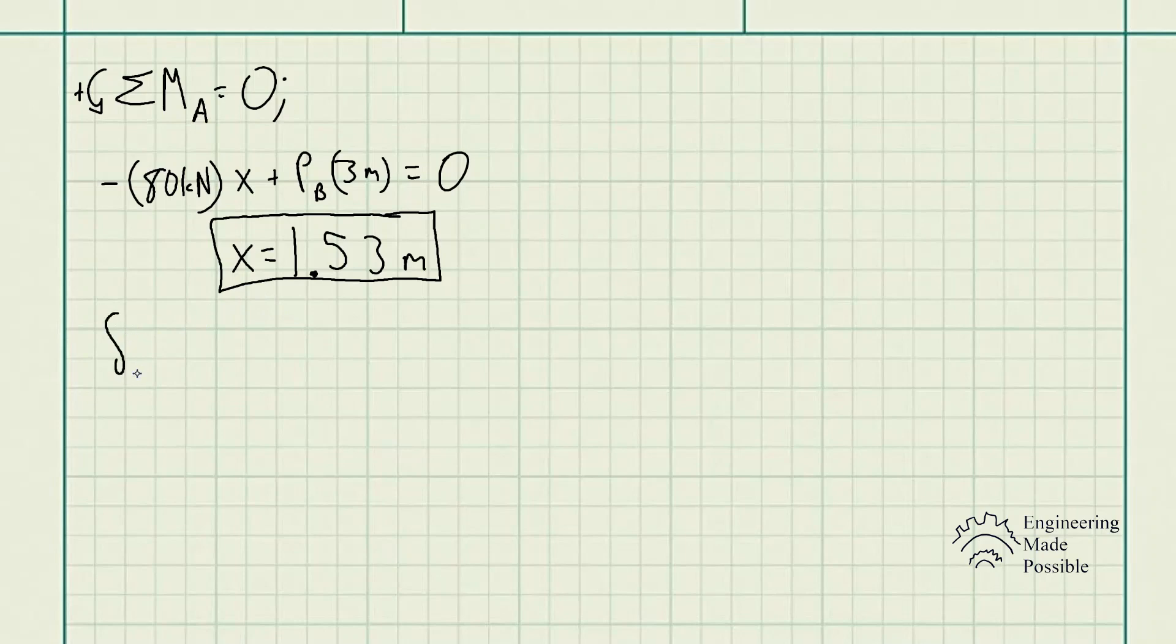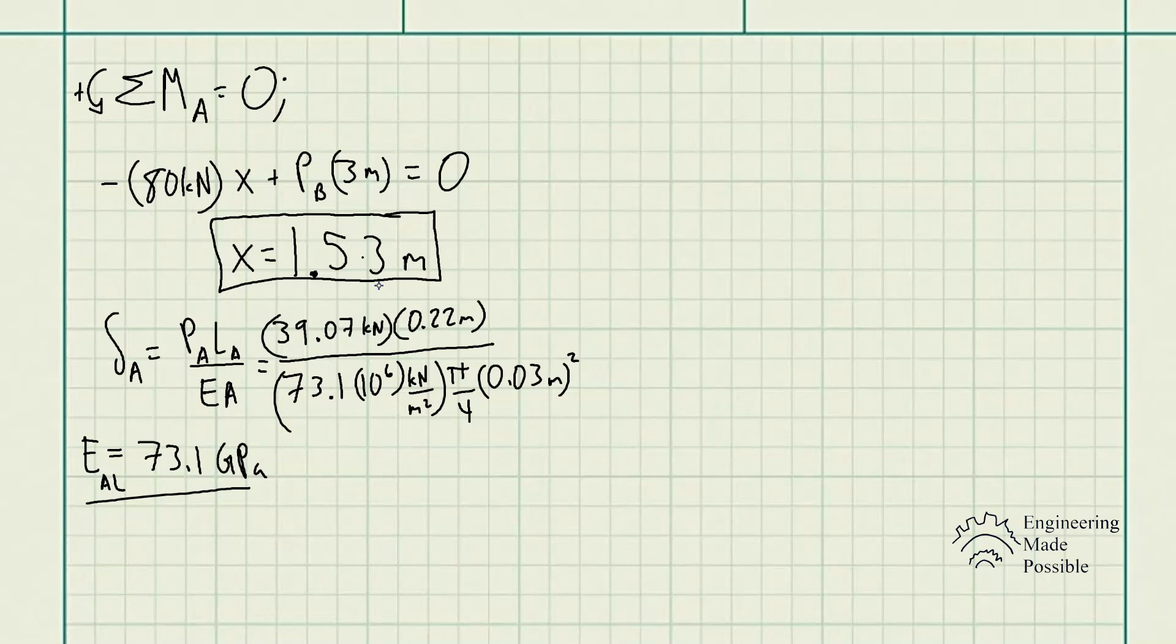Deformation equals the force in cylinder A, 39.07 kilonewtons, times the length converted to meters, 0.22 meters. We have the modulus of elasticity, usually from a table in your book. For aluminum it's 73.1 gigapascals. I'll convert it to kilopascals, which is 73.1 times 10 to the power of 6 kilonewtons per meter squared, times the cross-sectional area, which is pi over 4 diameter squared. Convert to meters to make sure all the units cancel out.